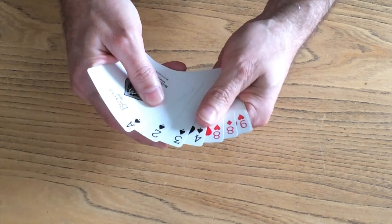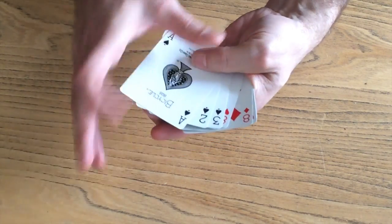We have the ace, two, three, four, and these other red cards here, just to show you what they are.